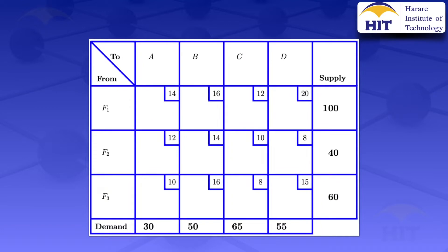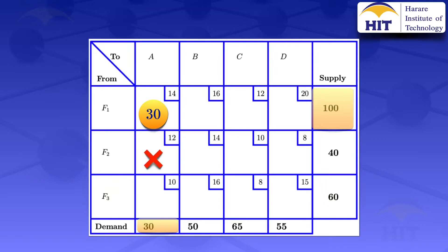To use the northwest corner method, we start at the top-left corner cell, which I've highlighted. The supply capacity is 100 and the demand requirement is 30, so we take the minimum of 100 and 30, which is 30. We allocate 30 units in this cell. By doing so, we have met the demand requirements for destination A, so we cross out this column — we can no longer allocate anything there.